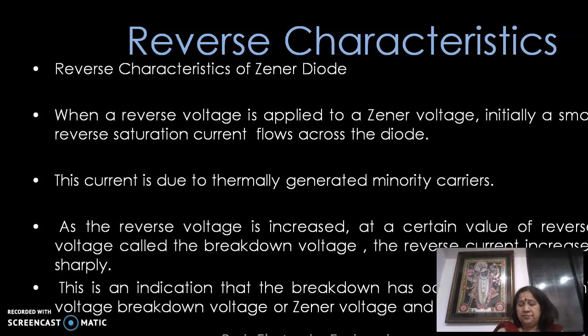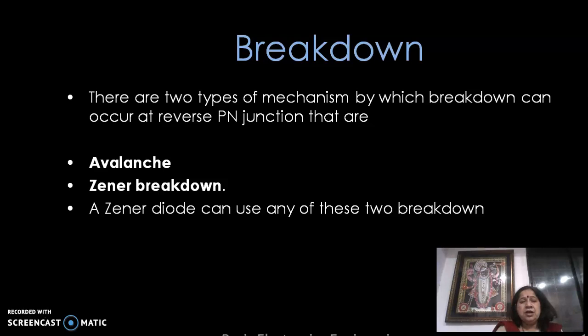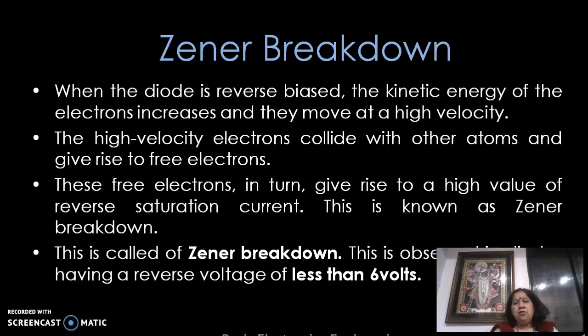Zener breakdown: this type of breakdown occurs when the diode is reverse biased — the positive terminal of the battery is connected to the cathode and negative to the anode. The kinetic energy of the electrons increases and they move at a very high velocity. Due to the high velocity, electrons collide with other atoms and give rise to free electrons, which in turn generate a high value of reverse saturation current. This is the zener breakdown and it is observed in diodes having a reverse voltage of less than 6 volts.